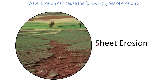When the top layer of the soil is removed over a large area by running water, it is called sheet erosion. Water is a very powerful agent of soil erosion. When there is no vegetation, it can simply drag the topsoil away and cause a very detrimental impact. The unprotected land becomes highly susceptible to sheet erosion.